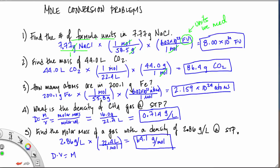In problem two, moles and moles cancel, liters and liters cancel, leaving grams — which is what we need for mass. In problem three, moles and moles cancel, grams and grams cancel, leaving atoms, which we need. In problem four, we need mass over volume for density: we have grams and liters set up properly. In problem five, liters in the numerator and liters in the denominator cancel, leaving grams per mole — the unit of molar mass — so the problem is set up correctly.